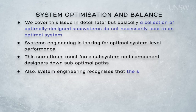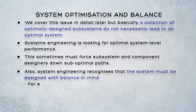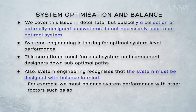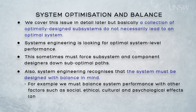Systems engineering also recognises that the system must be designed with balance in mind. For example, we must balance system performance with other factors such as social, ethical, cultural, and psychological effects, amongst many others. System optimisation and balance is a by-product of the top-down approach and can't be guaranteed by bottom-up methods.